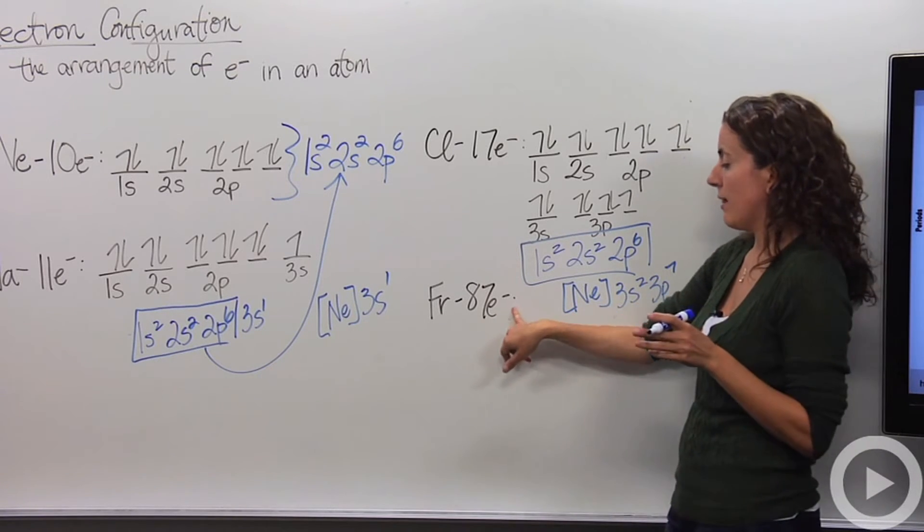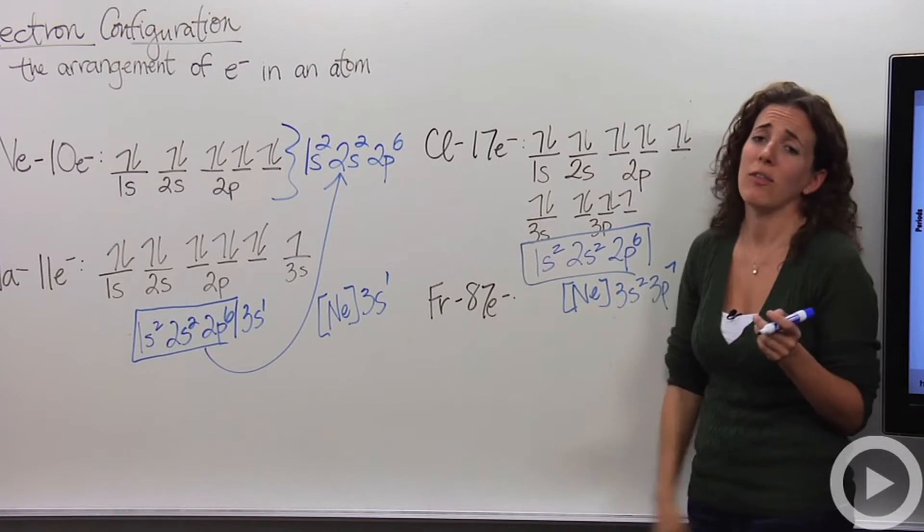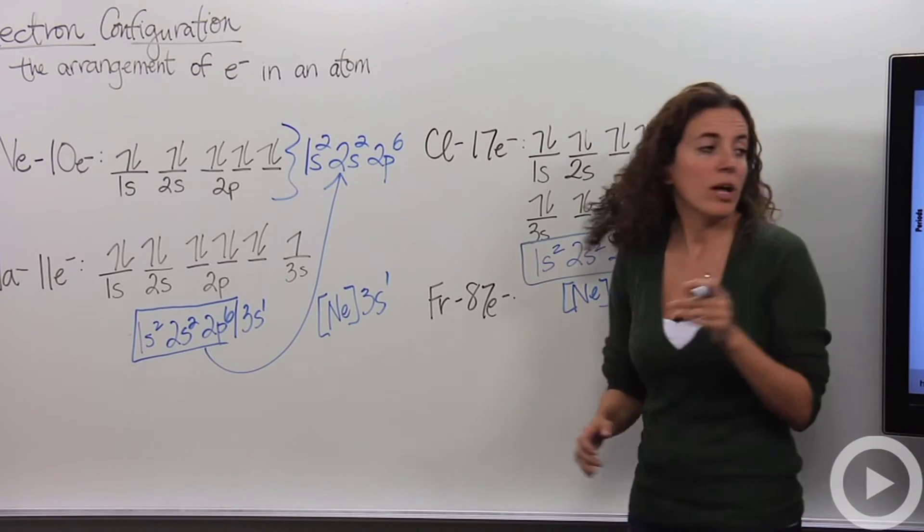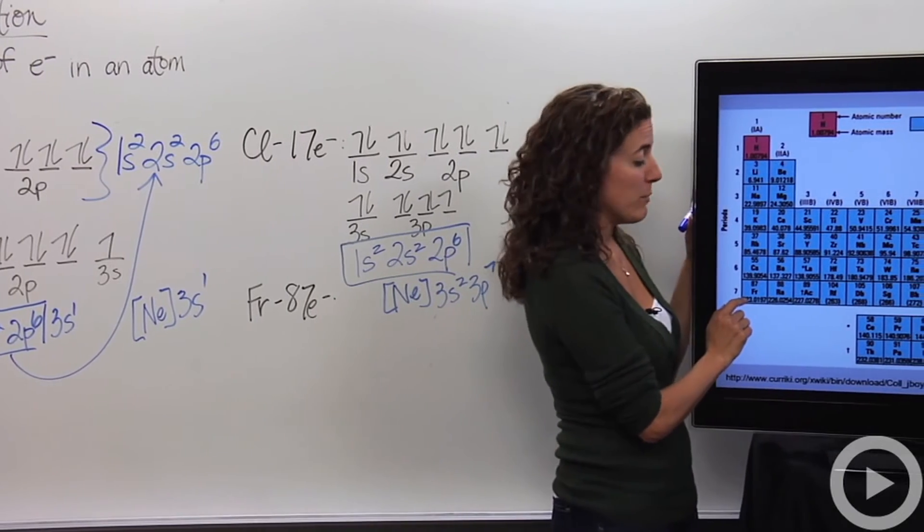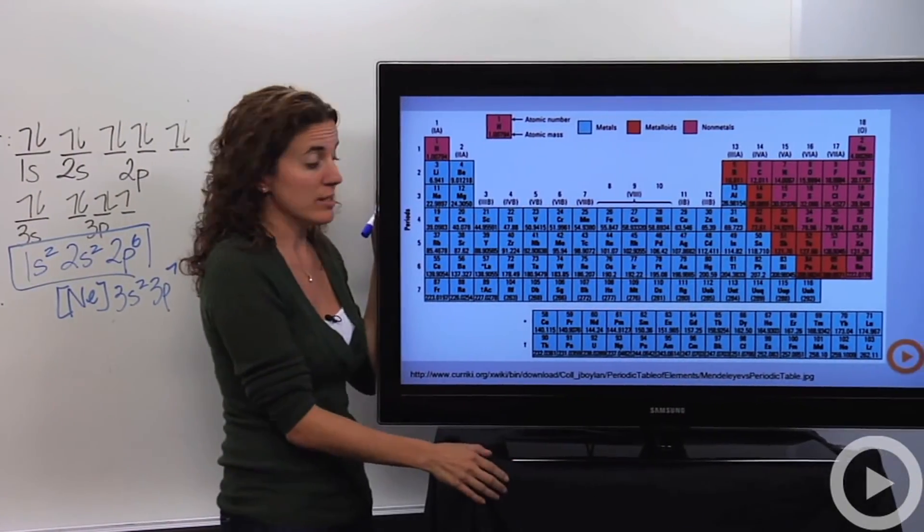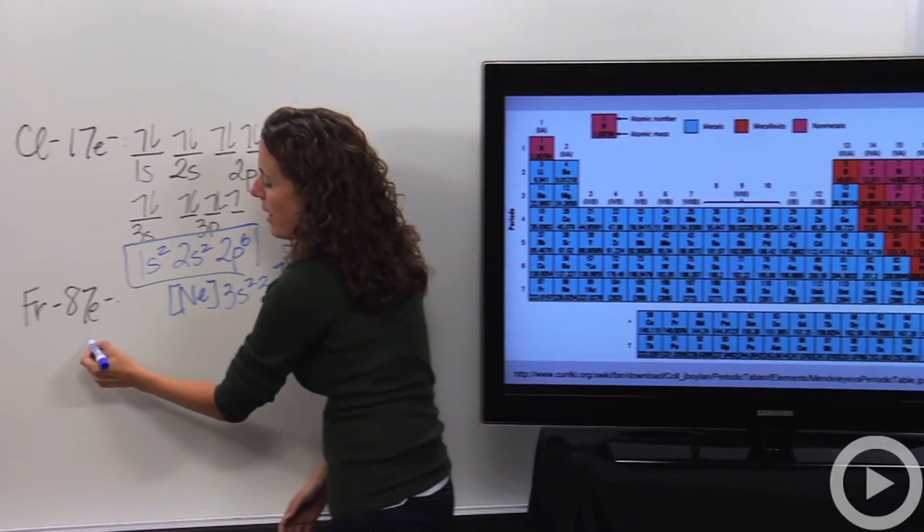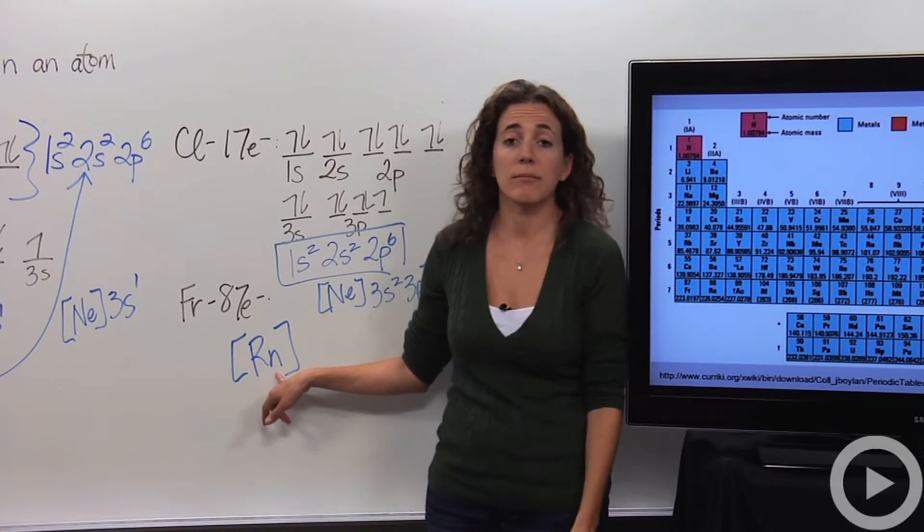But what if we come across an element that has 87 electrons, such as francium. That is a ton of electrons, and I don't want to have to draw all this out. This is just a pain. So an easy way to do this is, if you look at the periodic table, here's francium right here. The noble gas before francium is radon. Radon has 86 electrons. Francium only has one more. So we're going to say, okay, let's make it easy on ourselves. Let's say it has one more electron. Awesome.